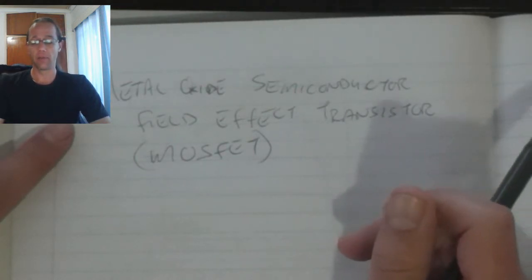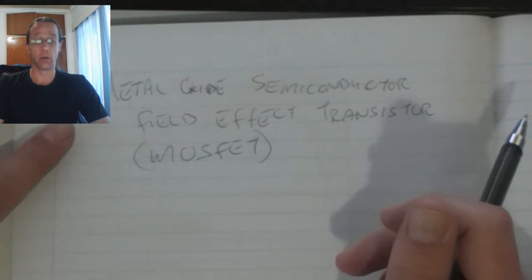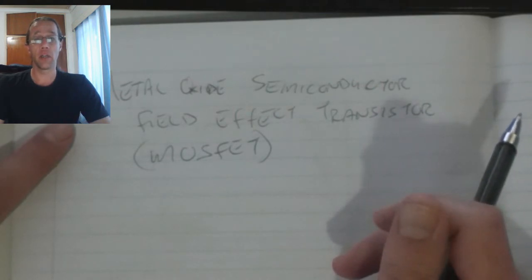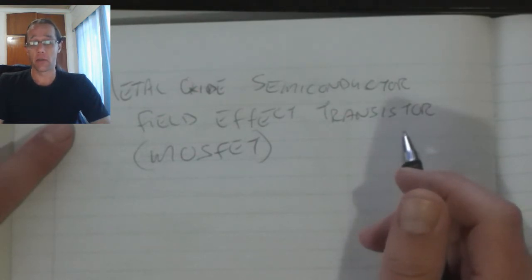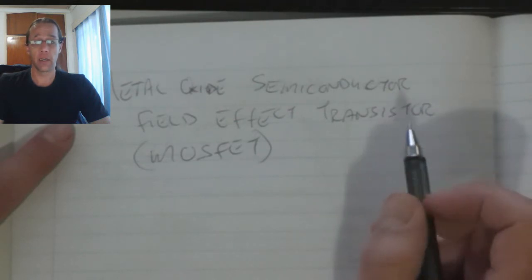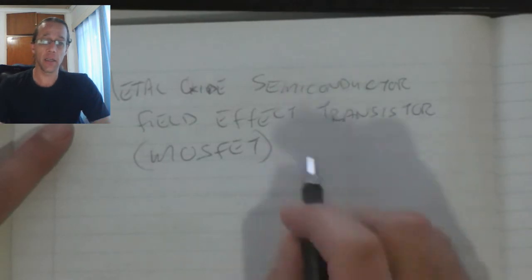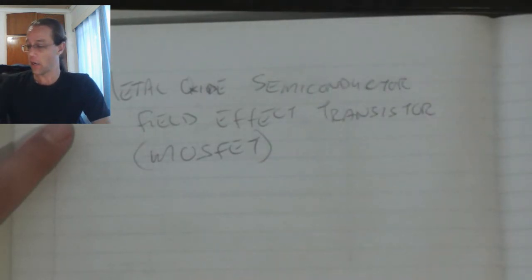The Metal Oxide Semiconductor Field Effect Transistor, or MOSFET, is sometimes called the insulated gate field effect transistor. It has the advantage over bi-junction transistors as well as junction field effect transistors in that the gate is insulated, and as a result there's no current loss through the gate.